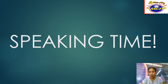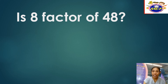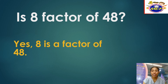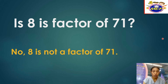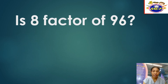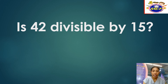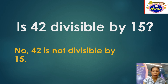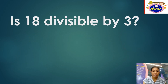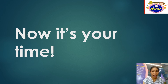Let's proceed to speaking time. Is 8 a factor of 48? Yes, 8 is a factor of 48. Is 8 a factor of 71? No, 8 is not a factor of 71. Is 8 a factor of 96? Yes, 8 is a factor of 96. Is 42 divisible by 15? No, 42 is not divisible by 15. Is 18 divisible by 3? Yes, 18 is divisible by 3.